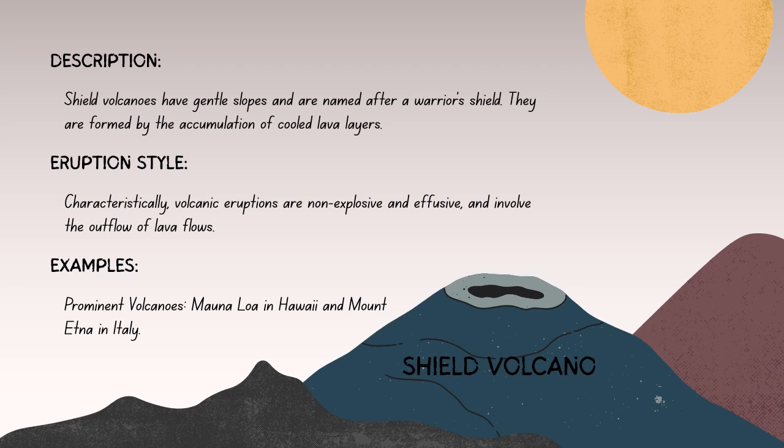The lava is relatively fluid — typically basalt — which allows it to flow easily and cover large areas, resulting in the gradual broad slopes associated with shield volcanoes. Unlike steep-sided volcanoes, shield volcanoes have gently sloping sides from the accumulation of numerous thin lava flows. They are often larger in surface area compared to other volcano types and can reach great heights, though their slopes are not steep.